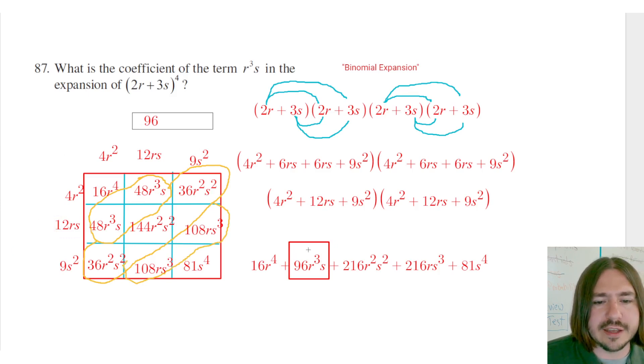So yeah, 96r cubed s is going to be that term. So the answer is going to be 96. So that's it for number 87. Thanks for watching. Y'all have a great day.